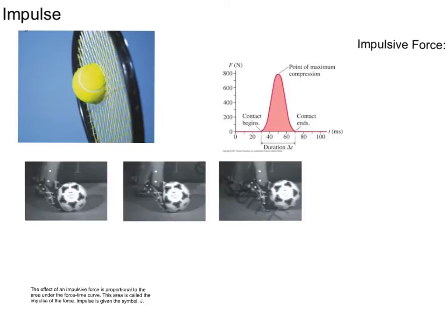Often times forces change as they act on an object. Take a collision for example, such as hitting a tennis ball or kicking a soccer ball. The force acting varies as it acts on the object. Also, the duration of the collision in these examples is very short, typically 1 to 10 milliseconds. A large force over a short time interval is called an impulsive force.